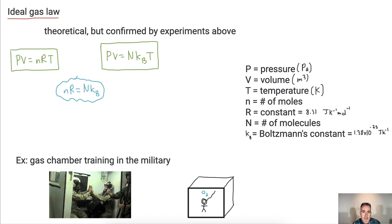Now hopefully this puts a number to it — before we said PV/T equals a constant, and now we know the constant is nR or Nk_B. How does this apply to real life? Well, lots of ways. If you're going into a pool, it explains why things under a lot of pressure have a smaller volume.